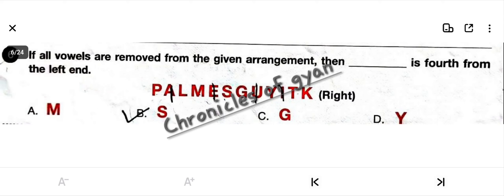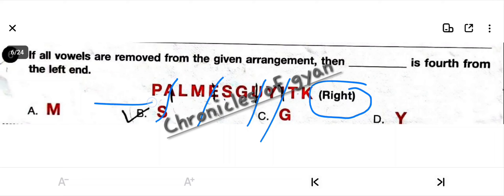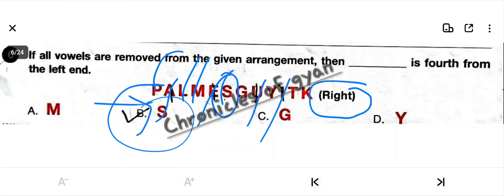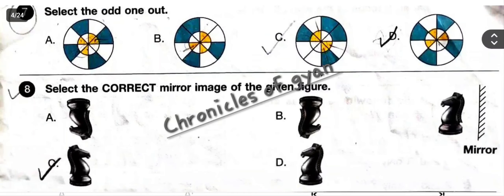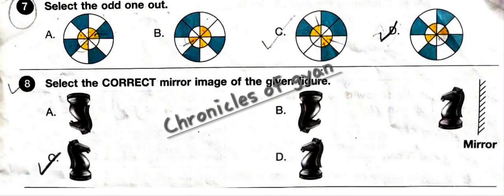Question 6: If all the vowels are removed from the given arrangement, then blank is fourth from the left end. First, remove all vowels — A, E, U, I. After removal, count from the left end: one, two, three, four. The fourth position from the left end is S. So the answer is option B.